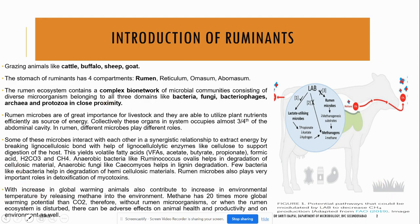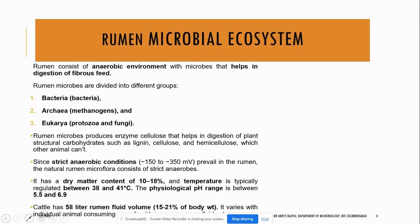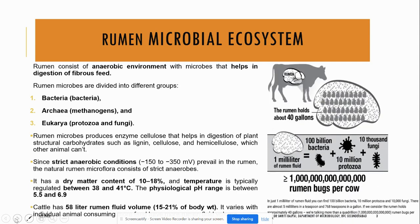Now, what is the rumen microbial ecosystem? It is an anaerobic environment in which bacteria, archaea, and eukarya are present. The conditions are strictly anaerobic, dry matter is 10 to 18 percent, temperature of the rumen is 38 to 41°C, and physiological pH is 5.5 to 6.9.